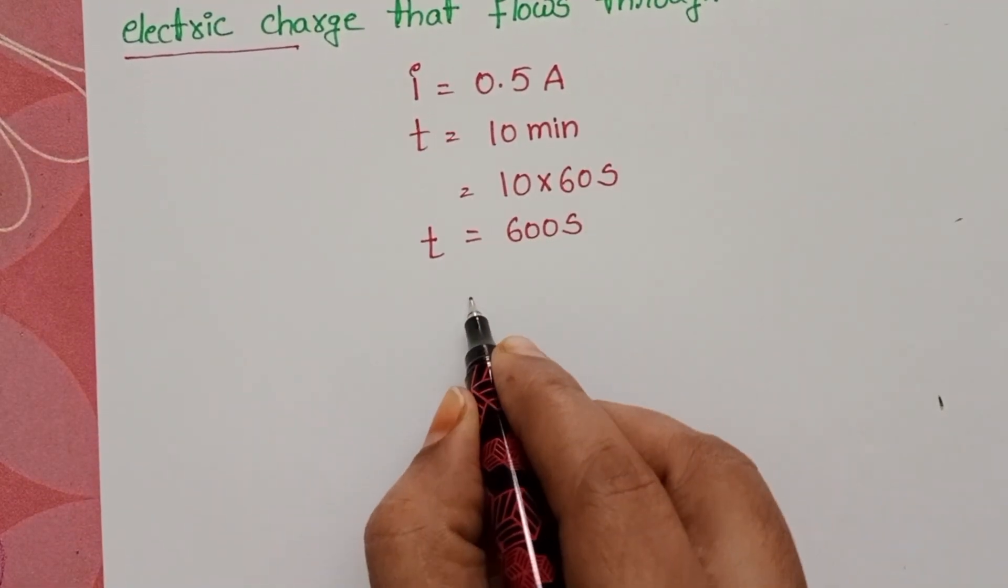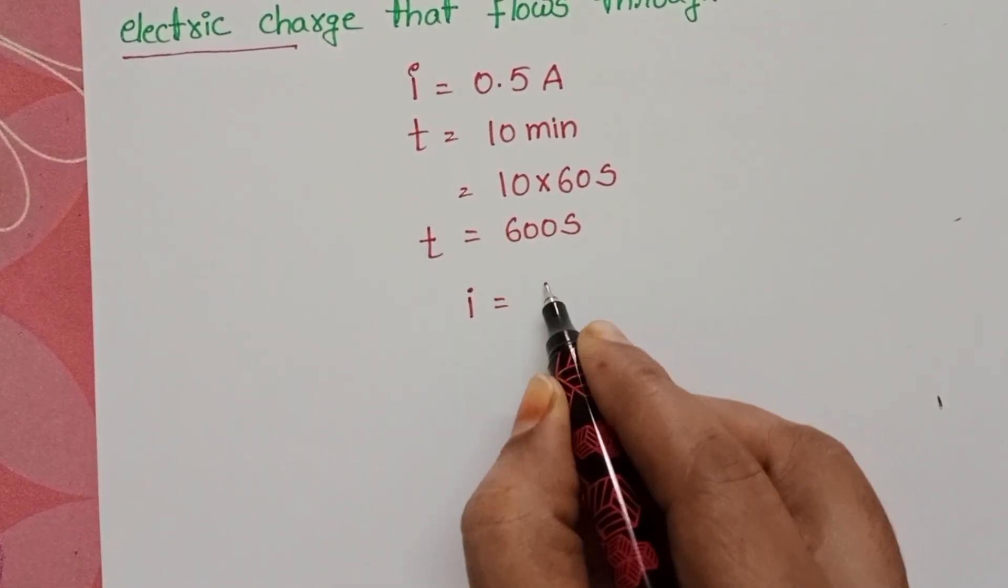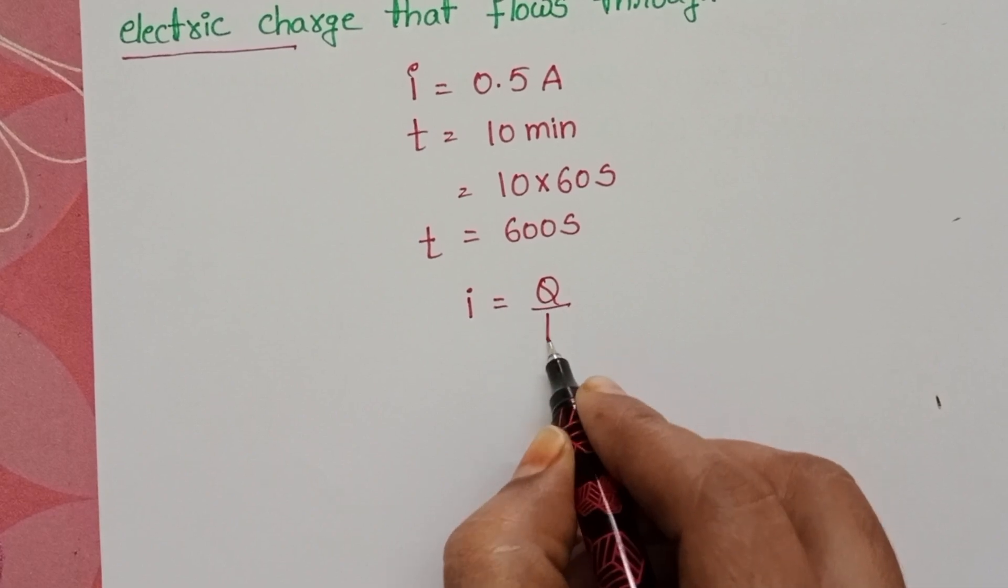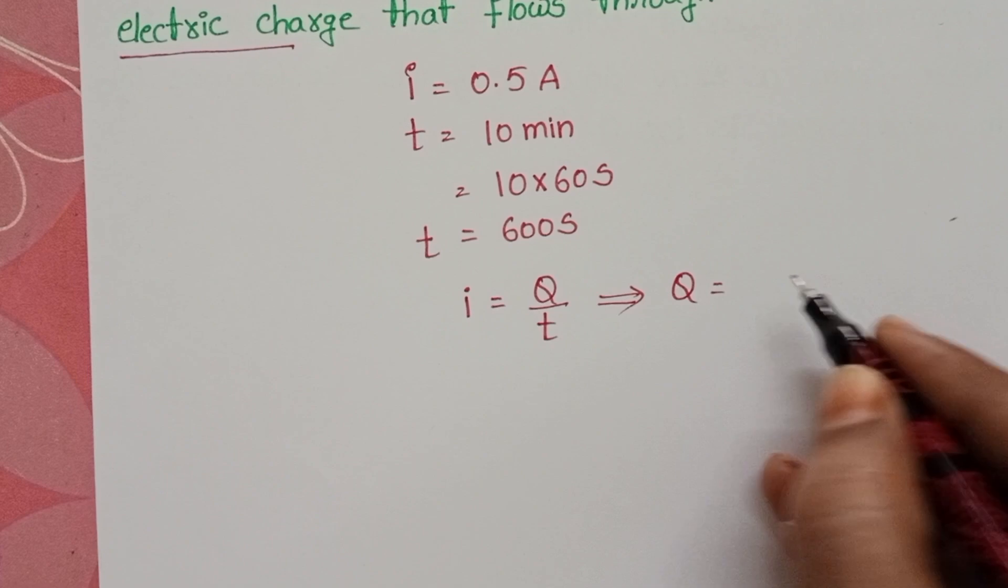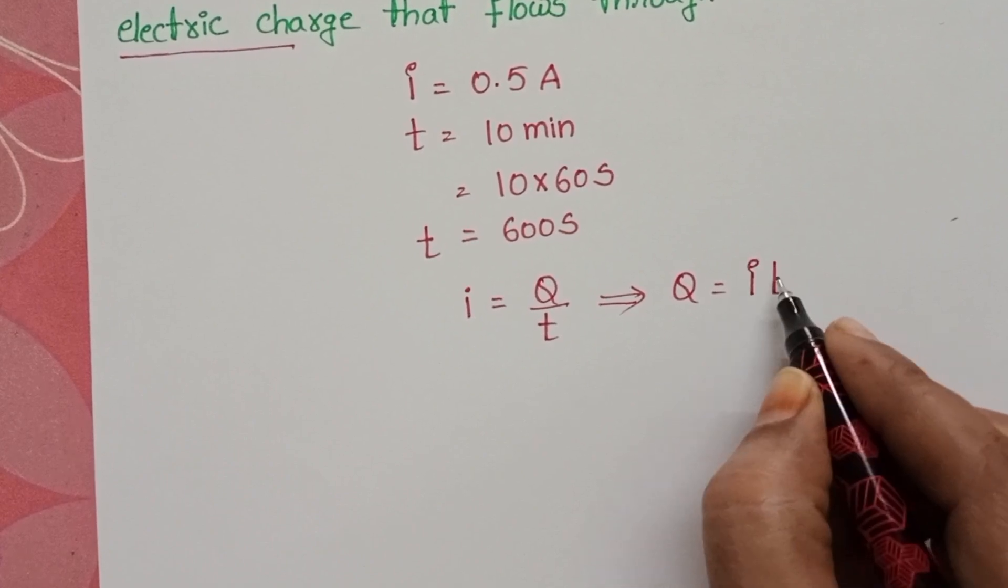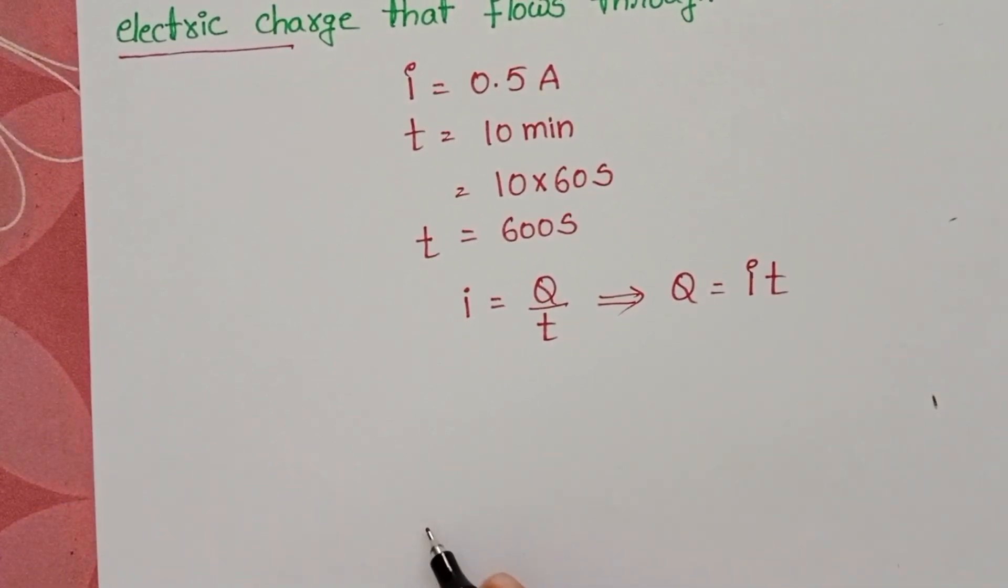Electric current formula: the rate of flow of electric charge is called electric current. I equals Q by T. From this, electric charge equals total current into time of flow. Q equals IT.